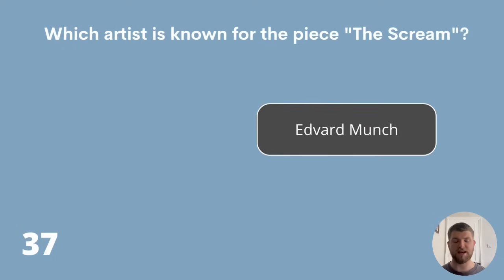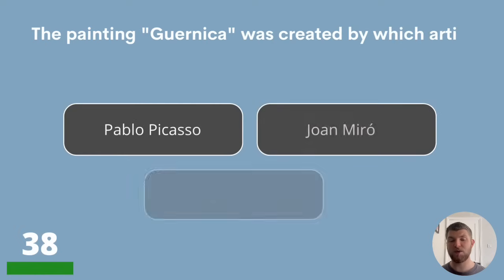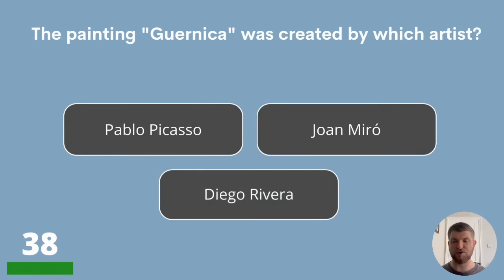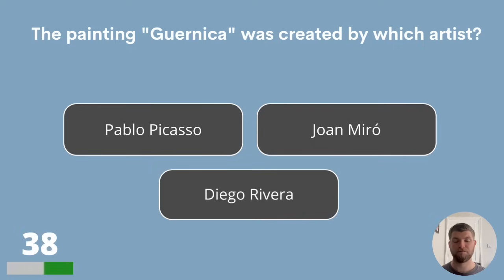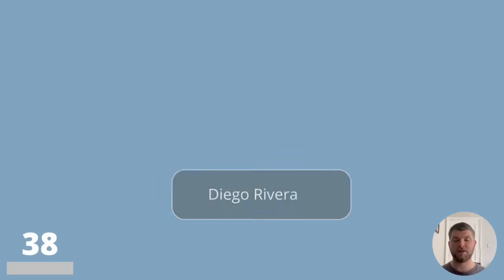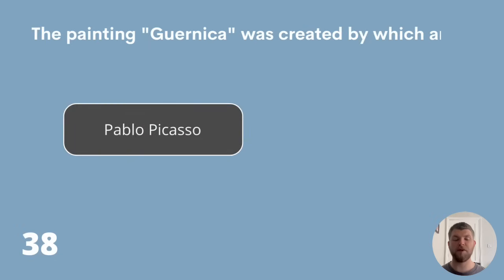Question 38. The painting Guernica was created by which artist? Is it Pablo Picasso, Joan Miro or Diego Rivera? The answer is Pablo Picasso.